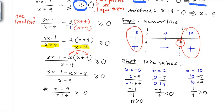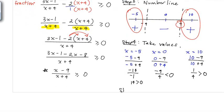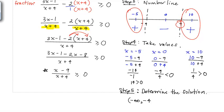Step five: write the solution. Because this is an inequality, the solution is an interval. We take all numbers to the left of negative 4, from negative infinity up to negative 4 — not including negative 4 since that's where the rational expression is undefined. Then union with 9, using a bracket since the expression equals zero there, all the way out to positive infinity. The solution is (negative infinity, negative 4) union [9, positive infinity).